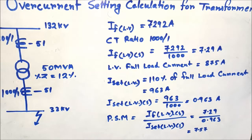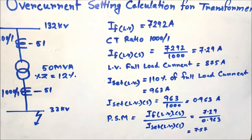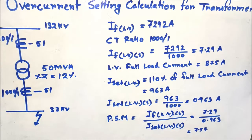The current set value for the LV overcurrent relay is 110% of the full load current. The full load current is 875 amperes, so 110% gives 963 amperes. Reflecting this to the relay secondary by dividing by the CT ratio of 1000/1, the I_set on the secondary side is 963 divided by 1000, which equals 0.963 amperes.